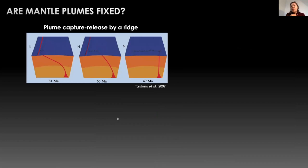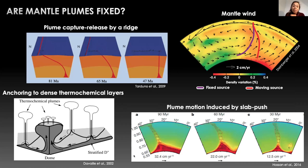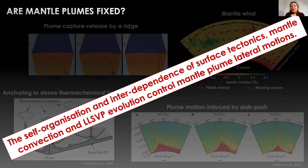A series of geodynamic explanations have been invoked to explain the fixity or the mobility of mantle plumes. Plumes could be either captured and released by ridges, be deflected by mantle wind, interact with slabs, or stay anchored at the edges of dense basal thermochemical piles.